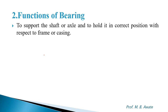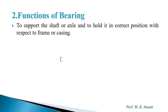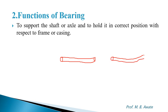If there is a shaft having a longer length, what happens? It may bend due to self-weight and its longer length. So the bearing supports the shaft and holds it in the correct position with respect to the frame or casing. Longer length shafts can be supported by using bearings.